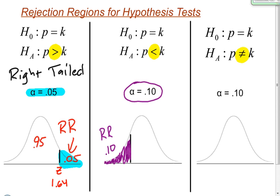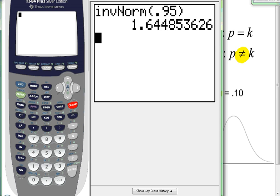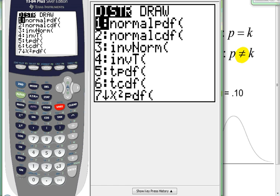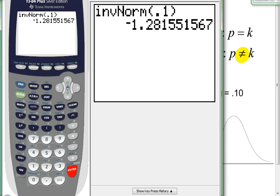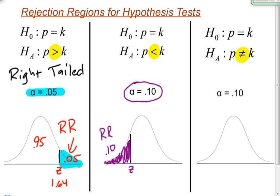What I'm looking for now is the z-score that cuts off this rejection region. I'll go to my calculator, which wants the area to the left. Since this is a left-tailed test, I already have the area to the left, so I'll type inverse norm of 0.1. I go second, VARS, number three — inverse norm of 0.1 — and when I hit enter I get negative 1.28. So the z-score that cuts off my rejection region is negative 1.28.